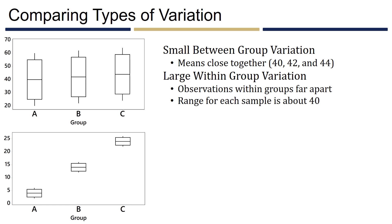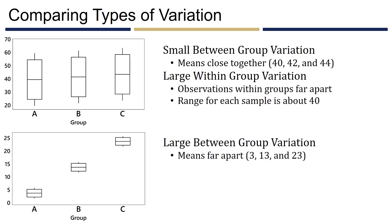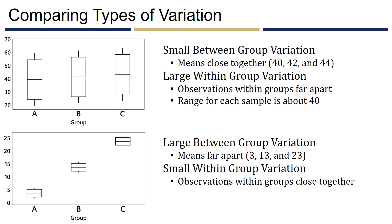The bottom box plots exhibit large between-group variation, with means of about 3, 13, and 23 — far apart from each other. They also show small within-group variation, with a range of about 5 across each group. Having large between-group variation and small within-group variation is an example where we would likely find a significant difference in the means.